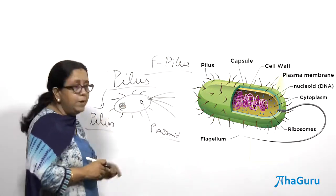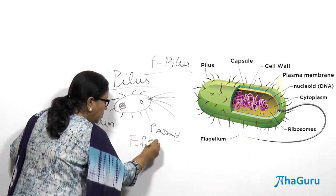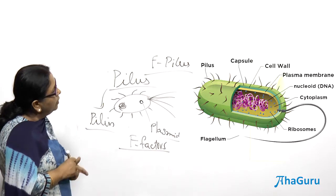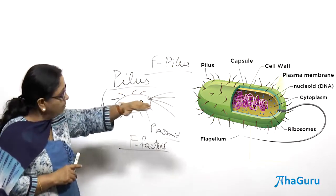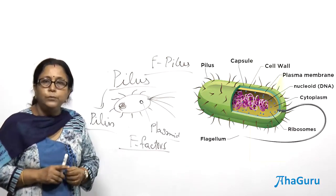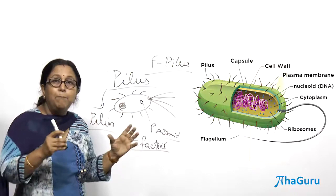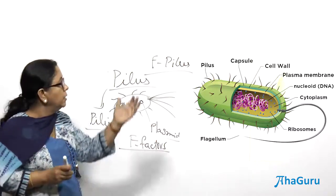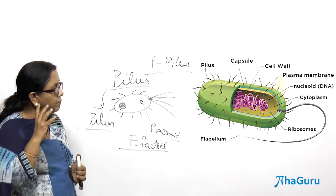Some plasmids are called F-factors — plasmids which help in bacterial recombination, which we will discuss later. Apart from the cell membrane and cell wall — the yellow thing is the cell membrane and the bluish thing is the cell wall — many bacteria also have a capsule on top. The capsule is made up of mucopolysaccharides and makes the bacterium pathogenic. Capsulated strains are highly pathogenic because they are not easily digested by digestive enzymes.